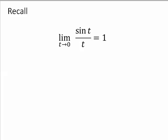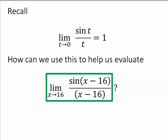Recall that sine of t over t, as t goes to zero, that expression is going to 1. How can we use this fact to help us evaluate the limit that we're looking for?